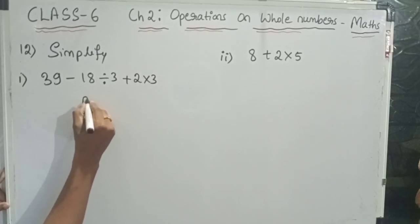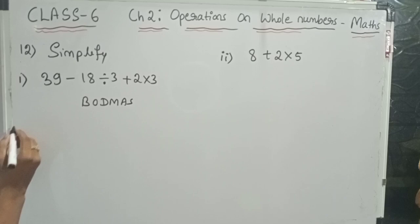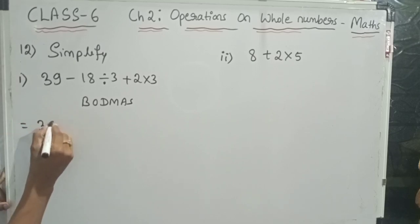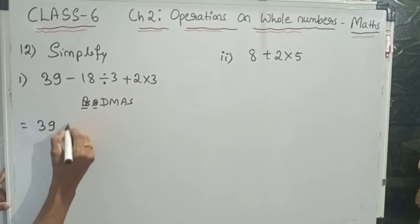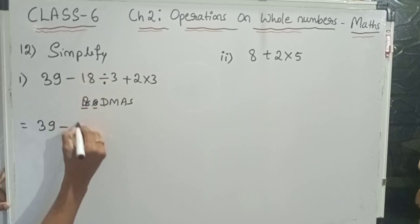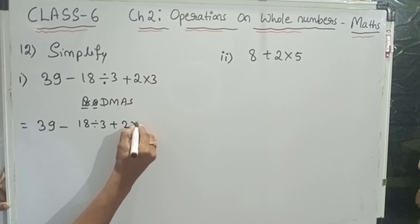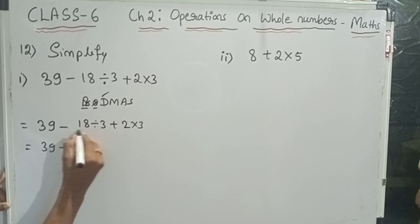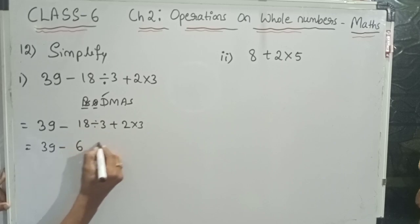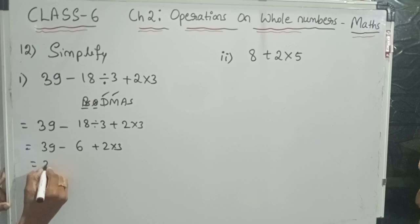To simplify, I am using the BODMAS rule: Bracket, Of, Division, Multiplication, Addition, and Subtraction. There is no 'Of', so I go for division first. 18 divided by 3 is 6, so the expression becomes: 39 minus 6 plus 2 into 3.